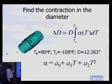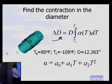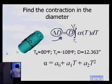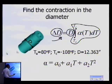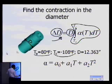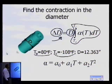In order to calculate how much is the change in the diameter, we are using this particular formula here. The change in the diameter is given by the diameter D, which is the original diameter, multiplied by an integral of the thermal expansion coefficient, which you integrate from the room temperature of 80 degrees Fahrenheit to the temperature of the liquid medium in which you are placing this trunnion, or the shaft, to be able to contract.